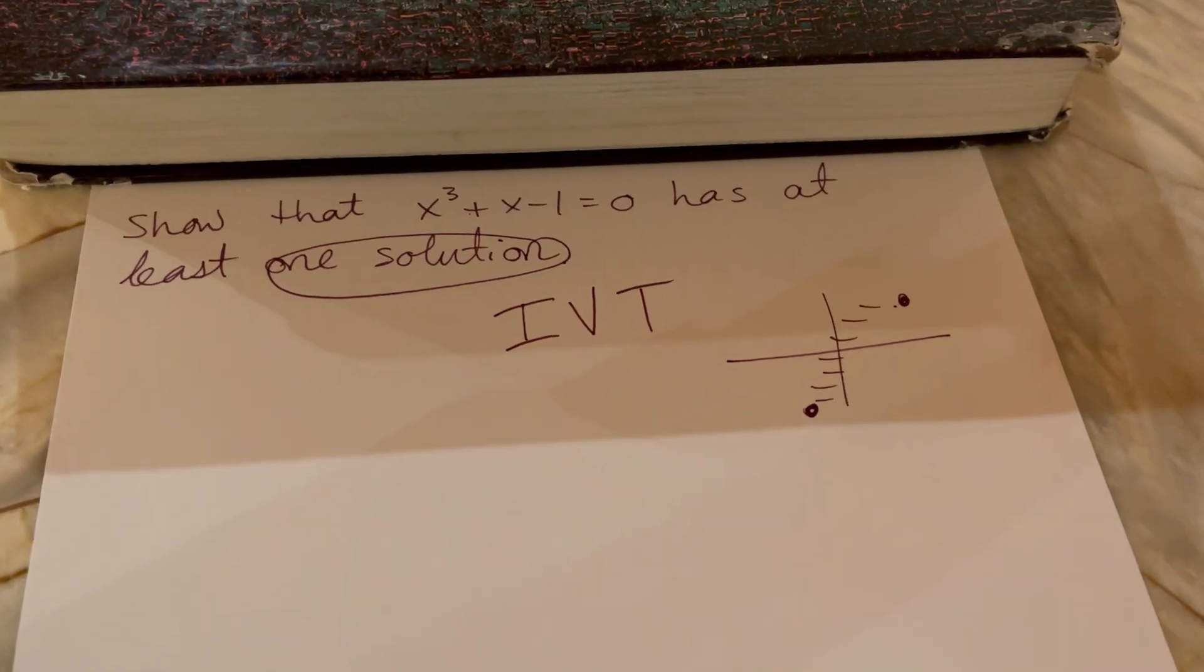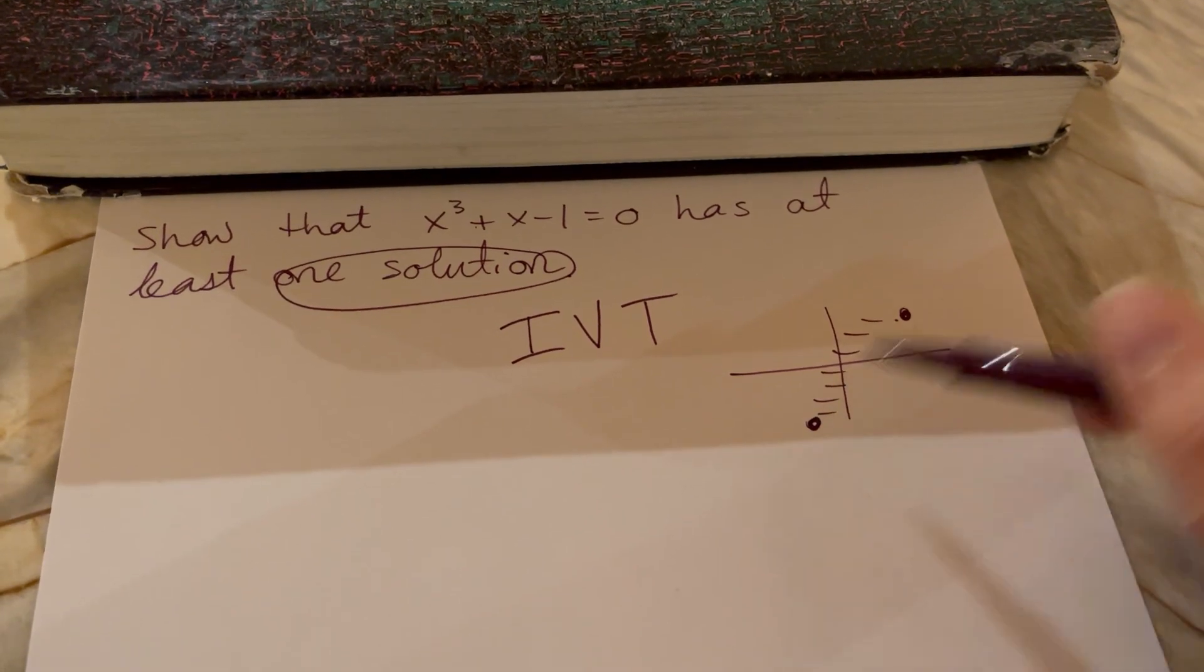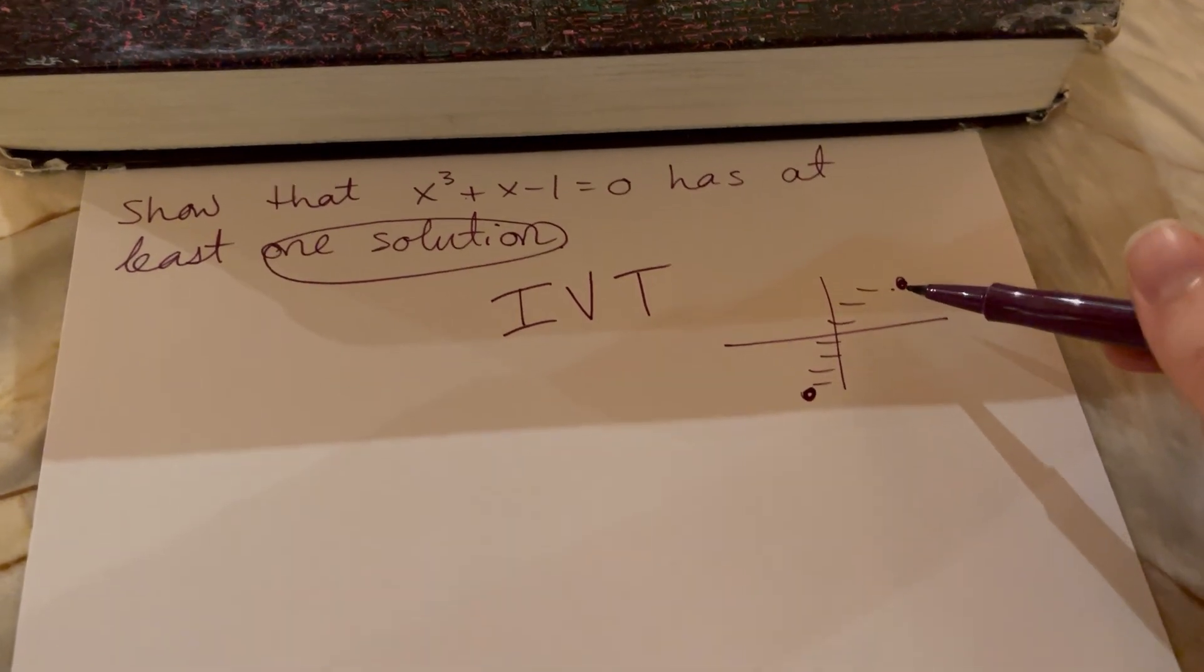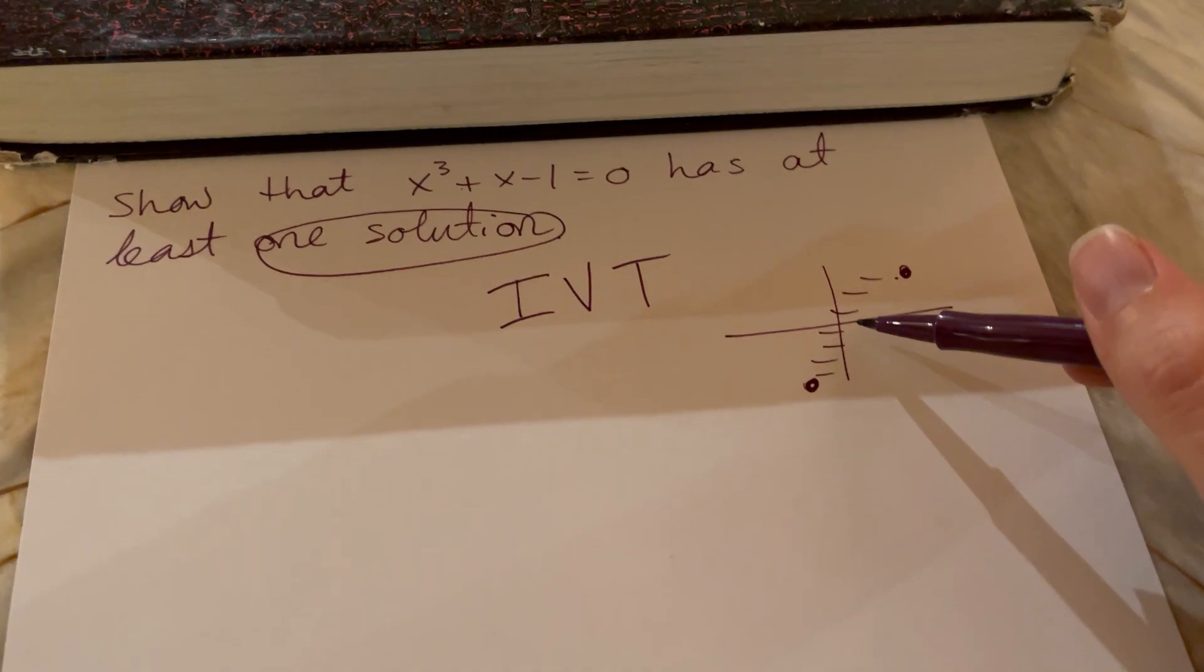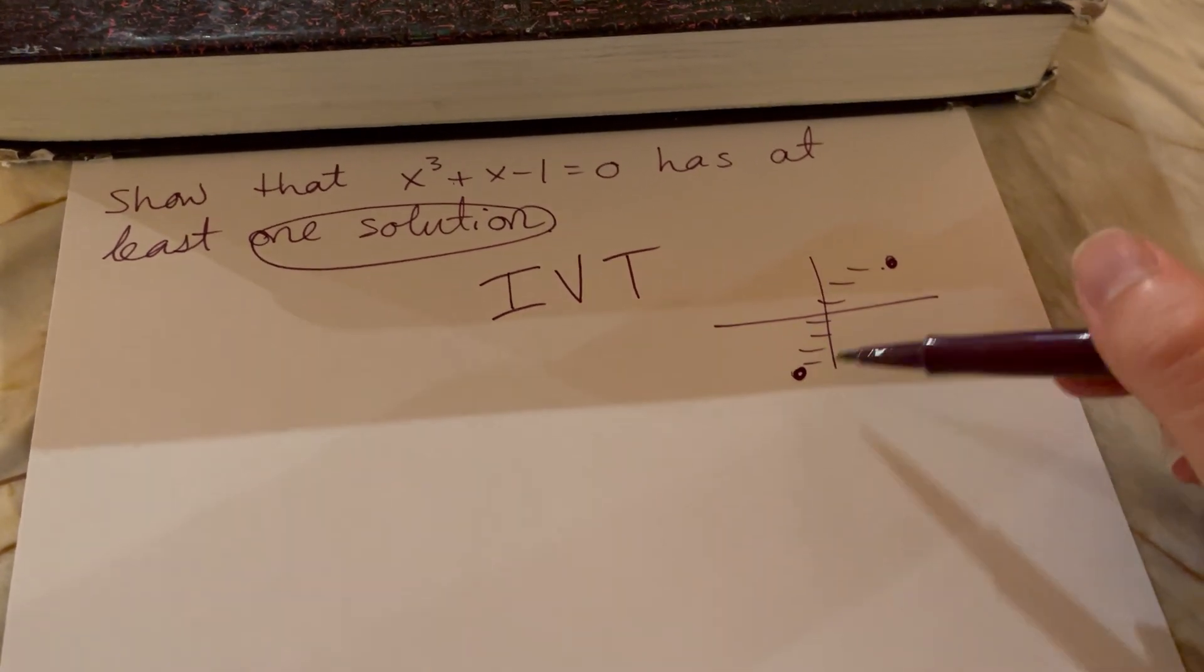Then between those x values you hit every single height in between. And oftentimes it's used if you start at a negative height and end at a positive height, then you had to have a height of zero or an x-intercept somewhere in between these x values.